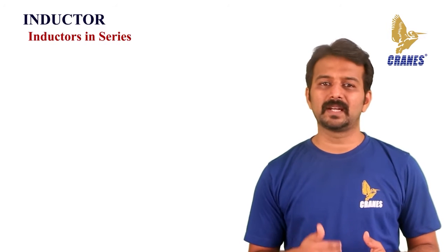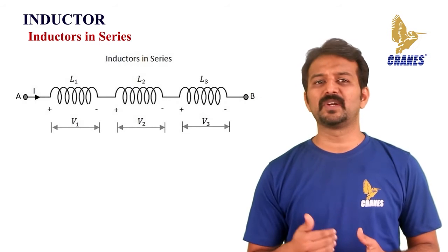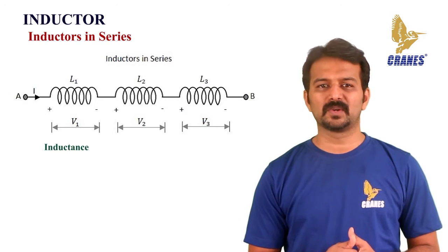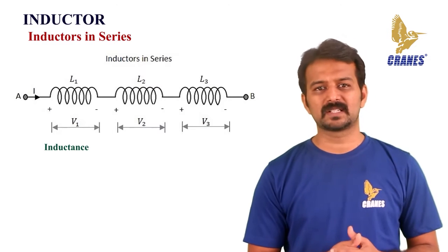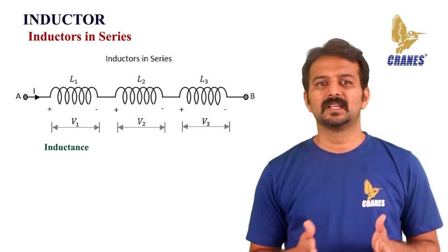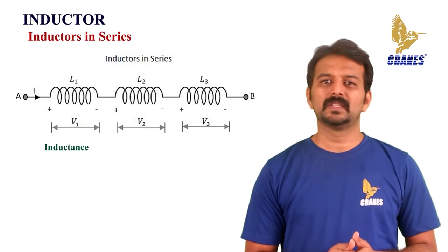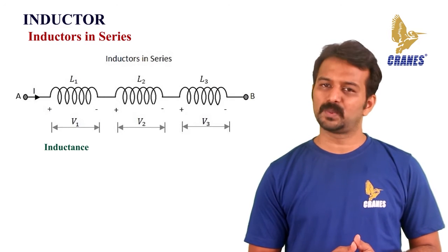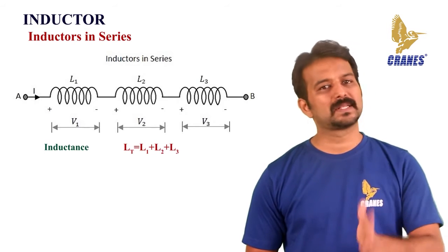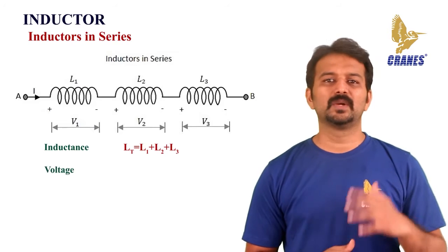Let us observe what happens when few inductors are connected in series. Consider three inductors with different values as shown. The total inductance of a circuit having series inductors is equal to the sum of the individual inductances. If L1, L2, and L3 are the inductances of the coils in the circuit, then the total inductance is given as LT = L1 + L2 + L3.